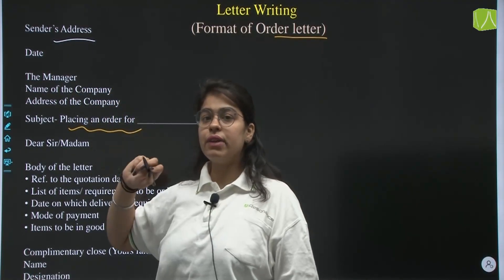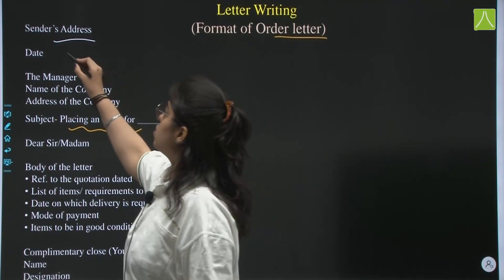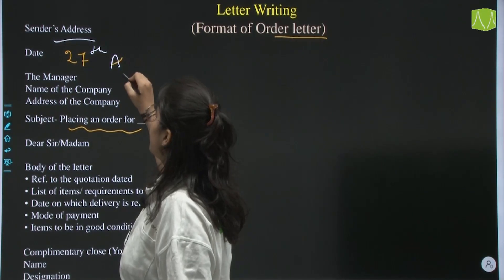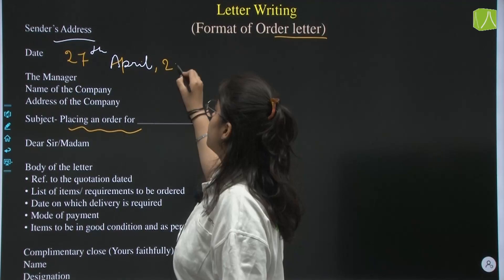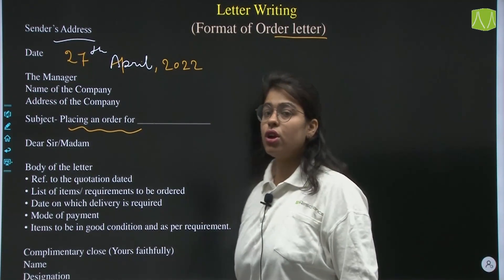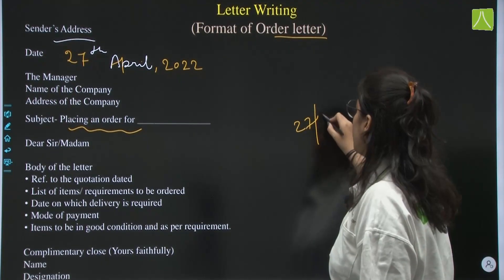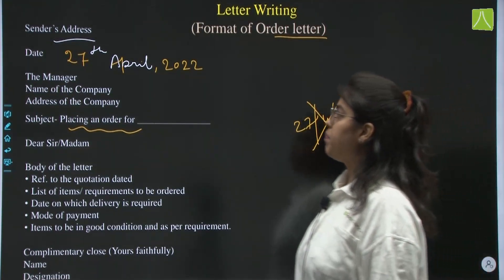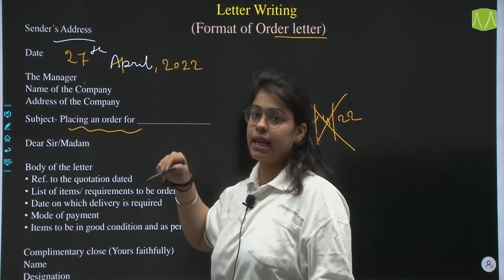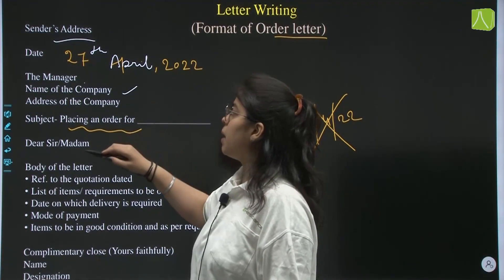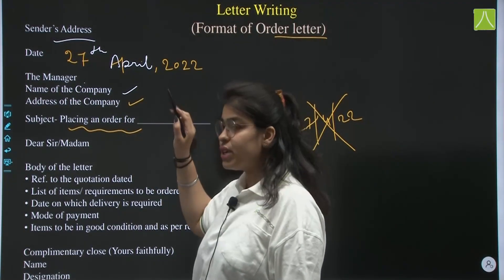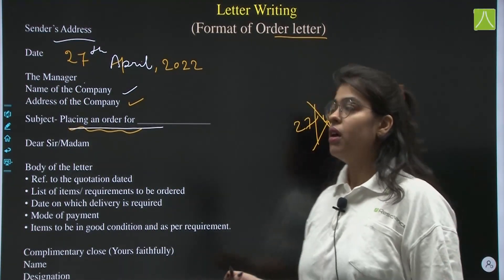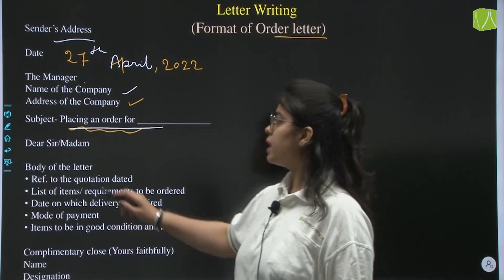Then the date. For example, if your exam is on the 27th, it would be written as 27th April 2022. Do not write it like 27 oblique 4 oblique 22 — that is a wrong format. Then you write the manager, the name of the company to whom you are placing the order, and their address. Then the subject: placing an order for stationery, clothing, furniture, or whatever you want. Then write dear sir or madam.